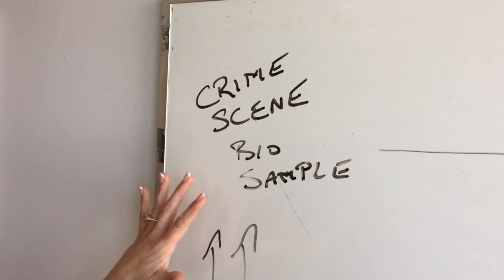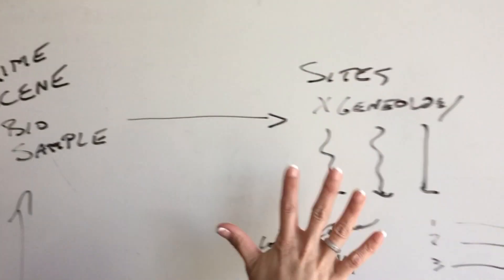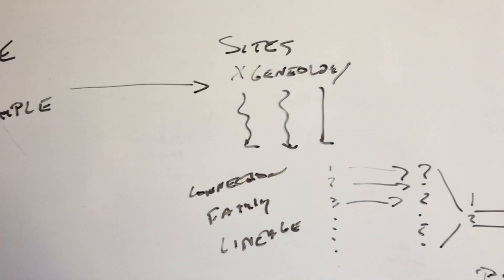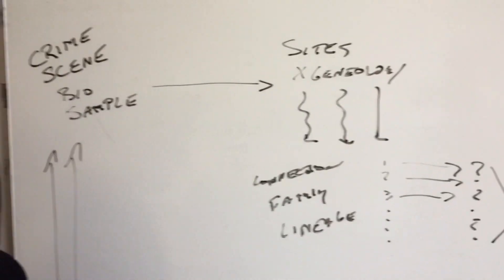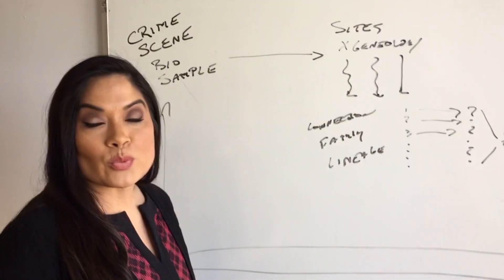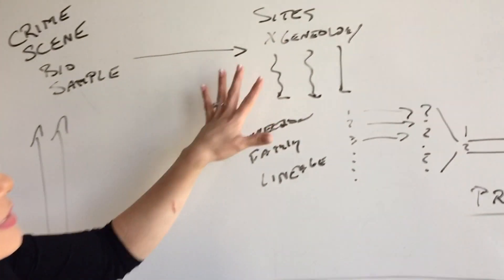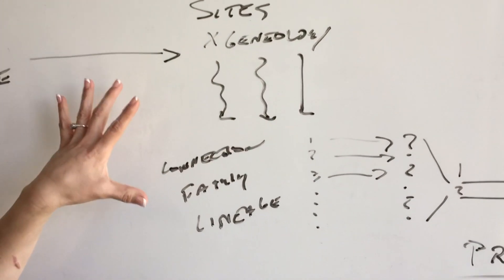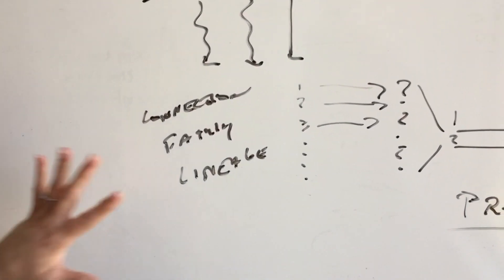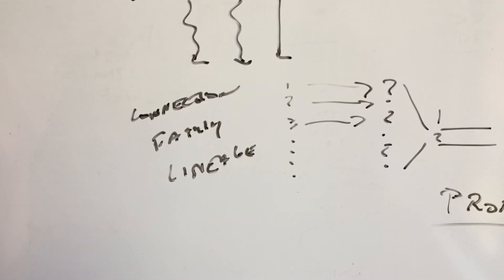They took a DNA sample from the crime scene and ran it through genealogy sites, databases, the kind held by Ancestry.com and 23andMe. Both of those organizations did not help with the investigation, but they ran it through some site like that in their database, which gave them family connections and possibilities to who that suspect might be.